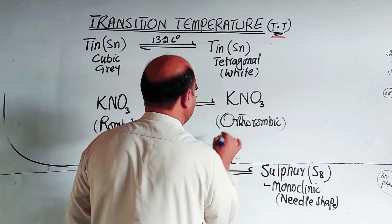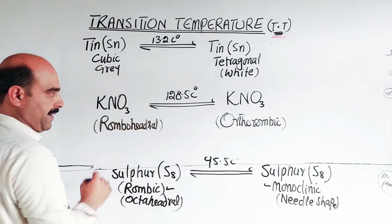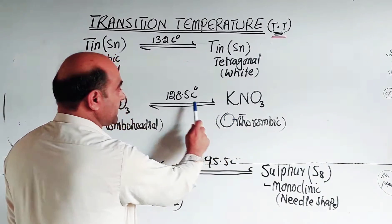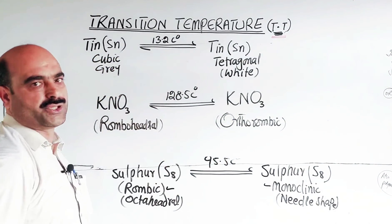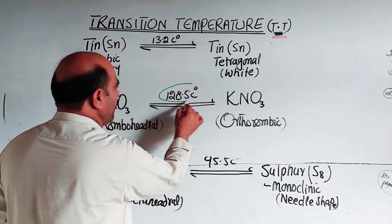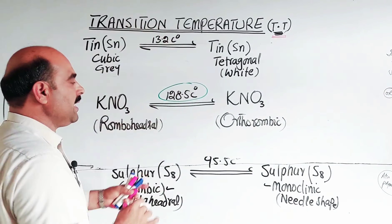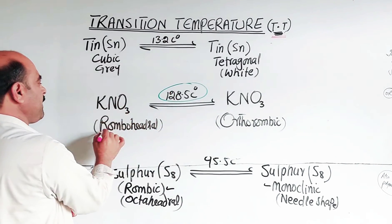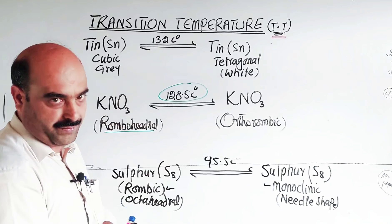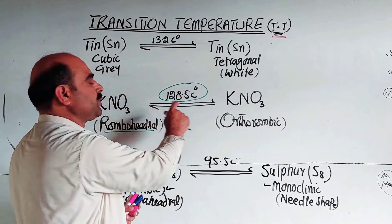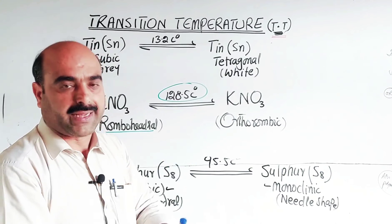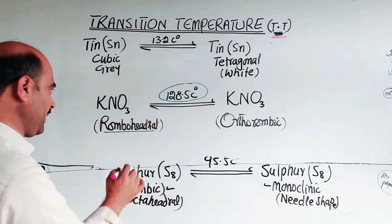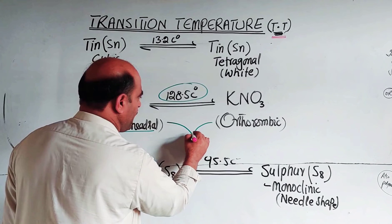The orthorhombic and rhombohedral shapes are two different crystal structures of potassium nitrate. At the transition temperature of 128.5°C, both crystalline forms co-exist simultaneously. Above or below this temperature only one crystalline form exists. This temperature is called the transition temperature — the rhombohedral and orthorhombic forms co-exist at this point.